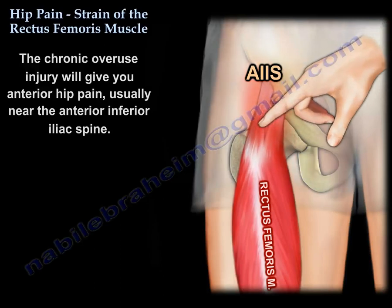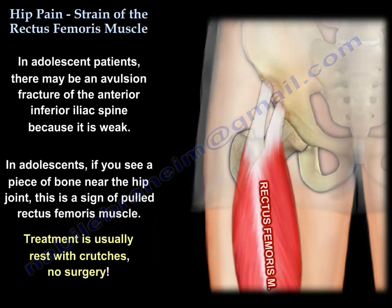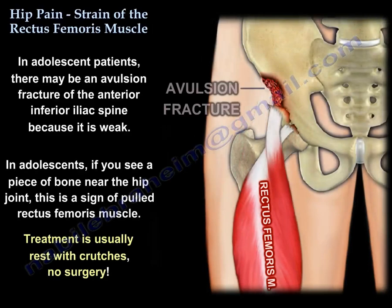In adolescents, you will see avulsion of the anterior inferior iliac spine because the bone is weak. If you see a piece of bone near the hip joint, this is a pulled rectus femoris muscle. It is innervated by the femoral nerve, and treatment is non-surgical — just rest and crutches.